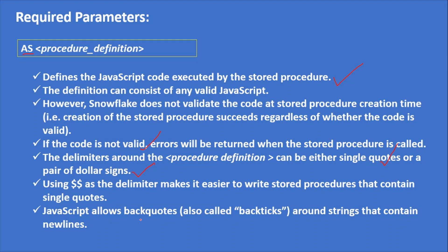So to avoid that, Snowflake always suggests using the dollar-dollar ($$) symbol for easier readability. JavaScript also allows backticks around strings that contain newlines — this is part of line continuation. There are two more options for line continuation that I will talk about in another video on Snowflake stored procedures.